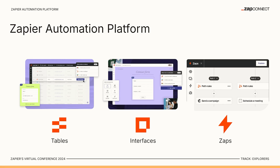Tables is your bones, and they provide structure for whatever tool or system you're building in Zapier. So you store your data, your projects, tasks, people, orders — whatever it might be. Tables gives your tool that structure.